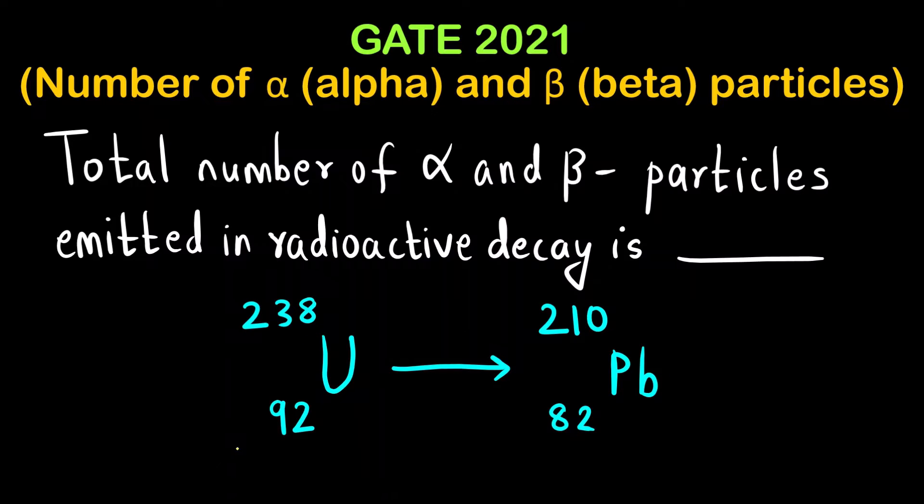The reaction given is uranium 238 with atomic number 92 decays to form lead Pb with atomic mass 210 and atomic number 82.